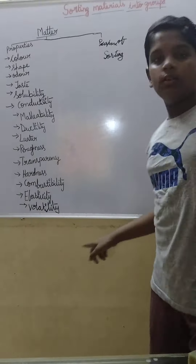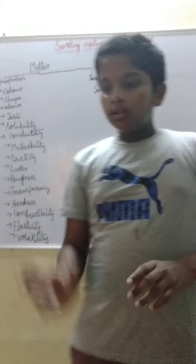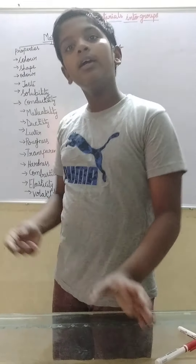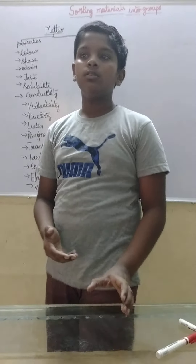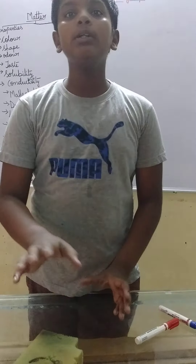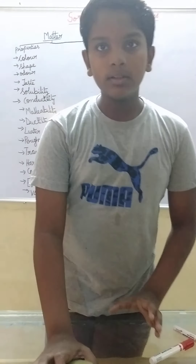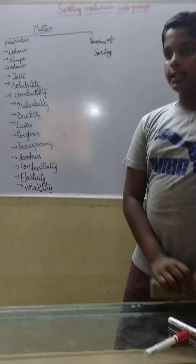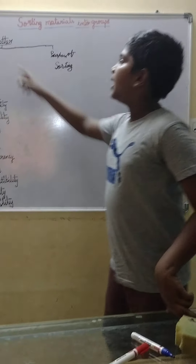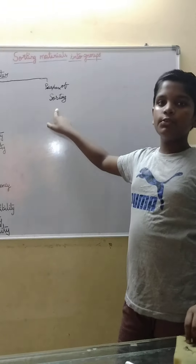Volatility. Volatility means — if you keep an object in the sun, does it become vapor? Take the example of petrol — keep it in the sun and it becomes vapor. But solid objects, no matter how long you keep them, do not transform into gas. So this is all about matter, its properties, and the purpose of sorting.